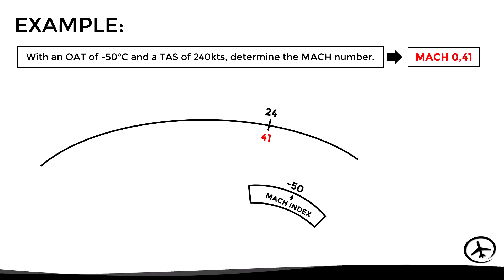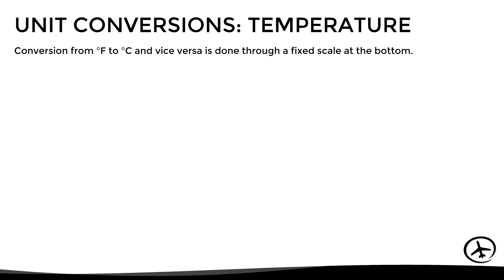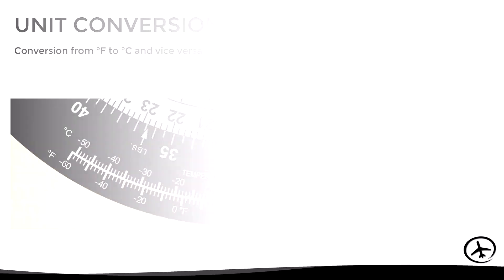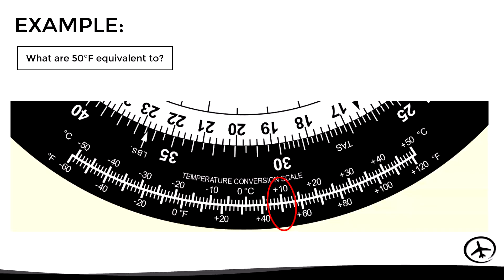The last unit conversion is temperature. Conversion between degrees Fahrenheit and Celsius is done through a fixed scale at the bottom of the fixed disk — simply read the converted value directly. For example, to convert 50°F to Celsius, look for 50 on the Fahrenheit scale and read the corresponding value of 10°C. This covers most of the operations and functionalities available on the calculator side of the E6B.